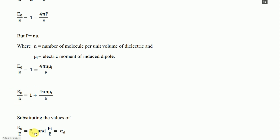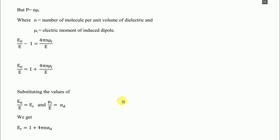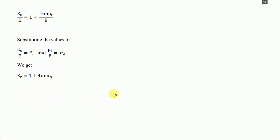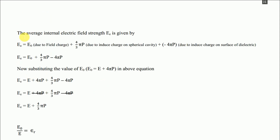Now we replace two terms: E0/E is replaced by εᵣ (the relative permittivity), and μᵢ/E is replaced by αd (the distortion polarizability). So the equation becomes: εᵣ = 1 + 4πn·αd. This completes Part 1 of the derivation.